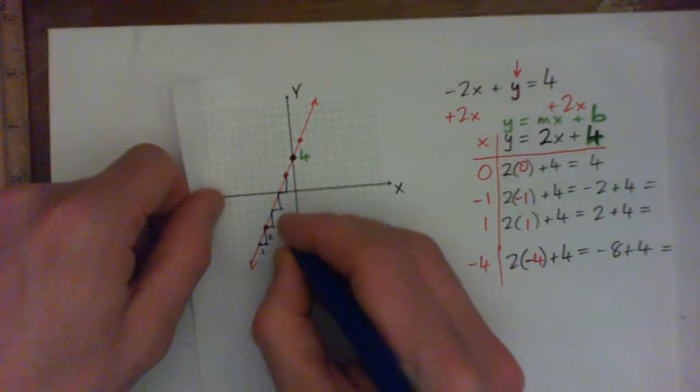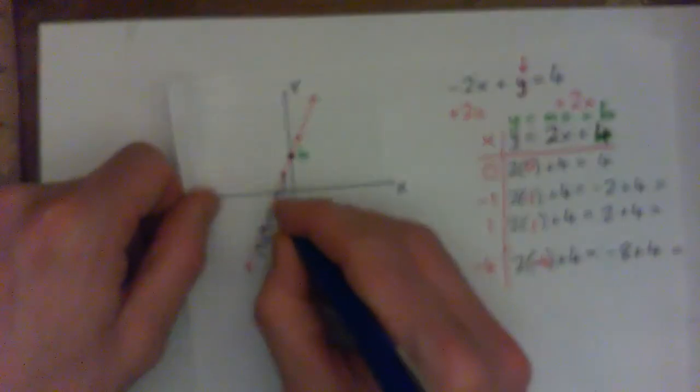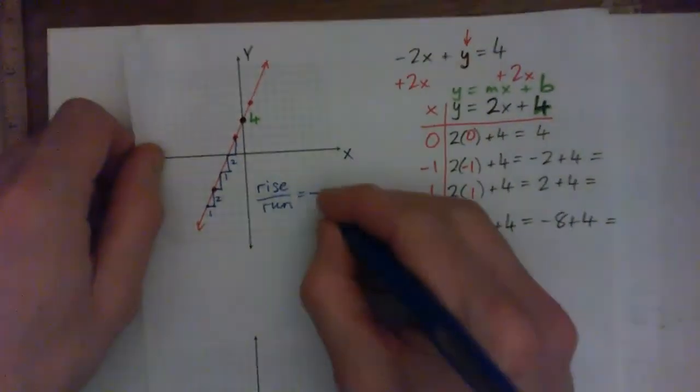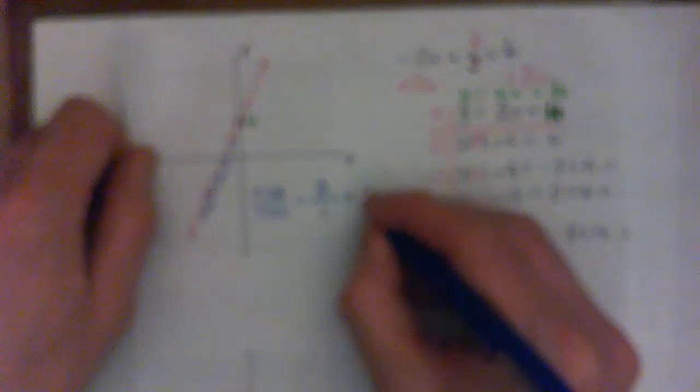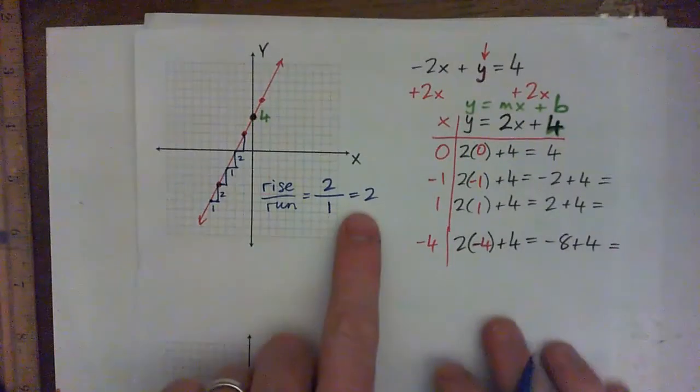What I hope you all are seeing is that every time we go over one space, we go up two to get to the next point. You go over one space, you go up two. You go over one, up two. So we're running one and rising two to get to the next point. So the run is one, the rise is two, so we have rise over run is two over one, which is just two. And where does two appear in the equation?